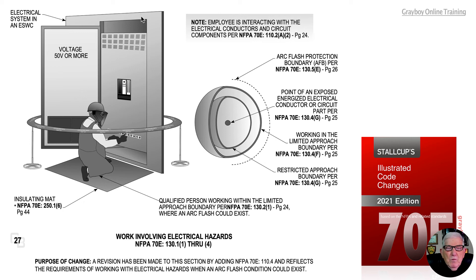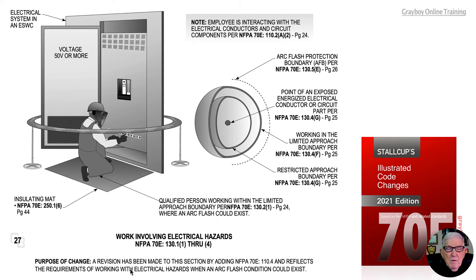This illustration deals with work involving electrical hazards in accordance with NFPA 70E 130.1 through 4. A revision was made and accepted by adding a reference to 70E 110.4, which reflects the requirements of working with electrical hazards when an arc flash condition could exist. Notice this worker in the illustration is working under such a condition.